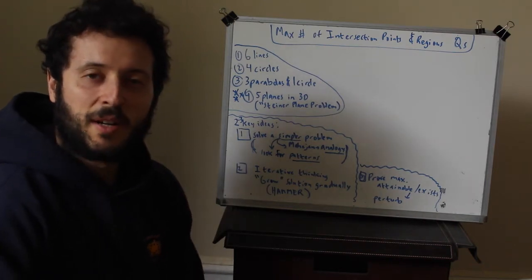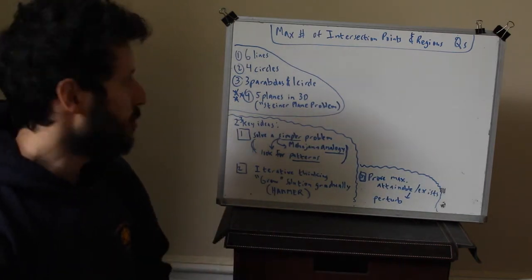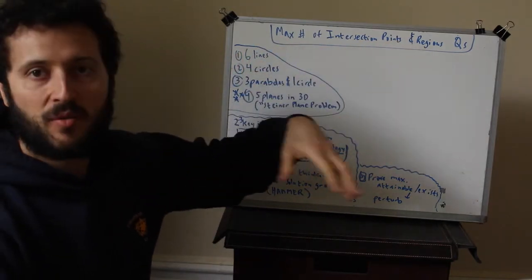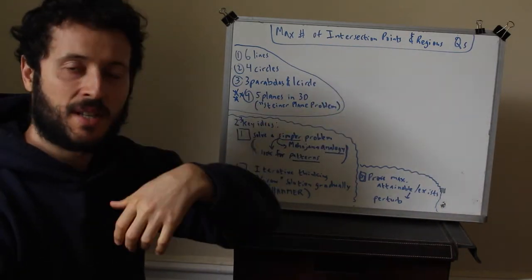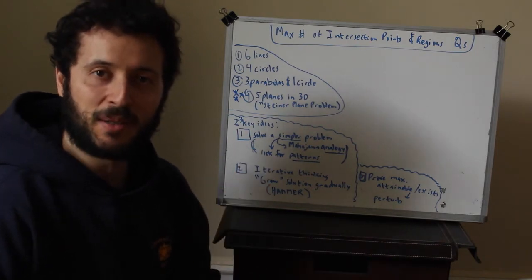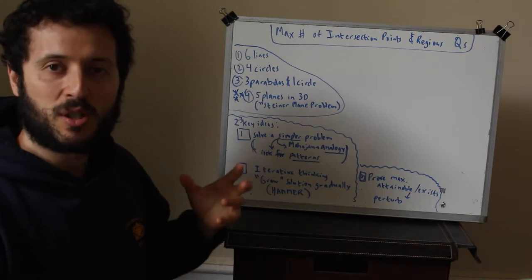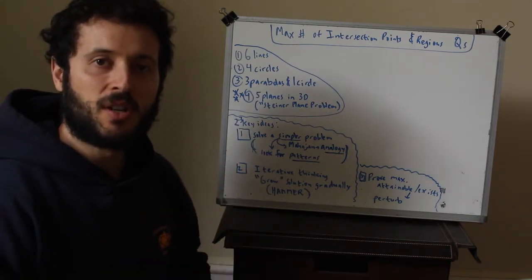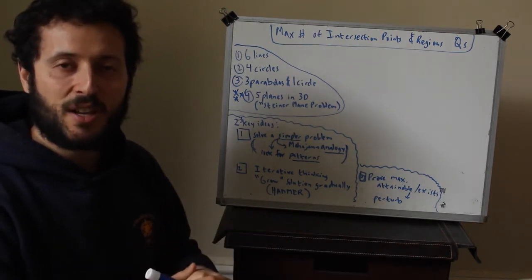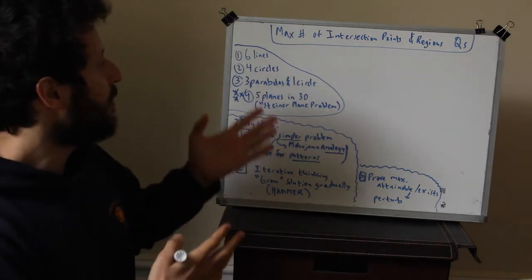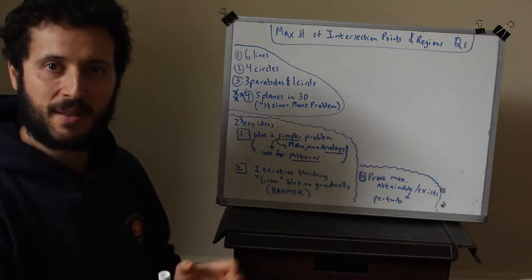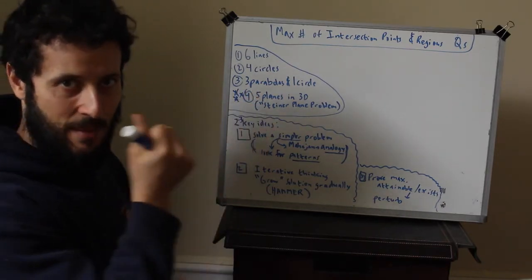Greetings Earthlings! Today I want to go over one of my favorite types of questions: how to find the maximum number of intersection points or regions. There are several variations of these types of questions. As I mentioned in a previous video on how to develop mathematical and geometric intuition, this is one of those conceptual builders. You don't want to just do number crunching and plug-and-chug — you also want to do very abstract problems. Although these do require a number at the end, it's a very conceptual type of problem.